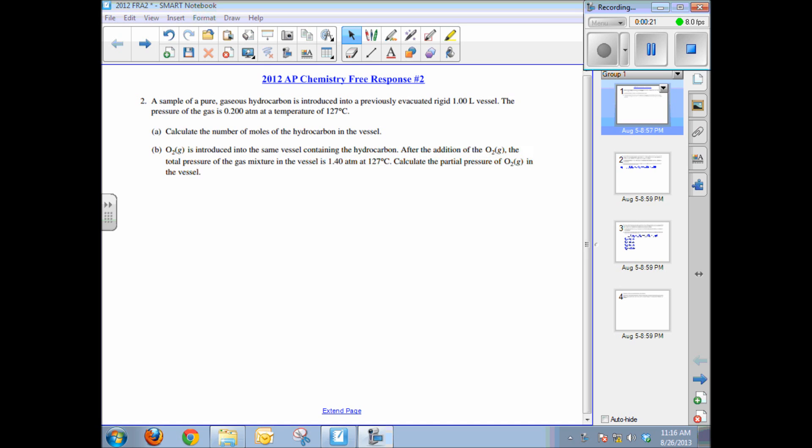Part A, calculate the number of moles of the hydrocarbon in the vessel. This is a straight up PV=nRT problem. You just simply have to rearrange to solve for n. So n is equal to PV over RT and substitute the values in, 0.2 atmospheres times one liter over R